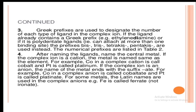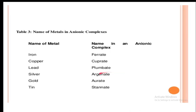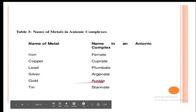Using Latin names for complex anions: iron is ferrate, copper is cuprate, lead is plumbate, silver is argentate, gold is aurate, and tin is stannate.